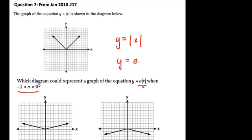So y equals a times |x|. When they say a is between negative 1 and 0, here's 0, here's negative 1, they mean a is some value in here, not equal to 0 or negative 1. It's some negative fraction, like negative 1/2 or negative 1/3.